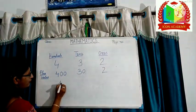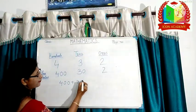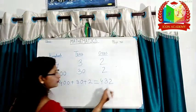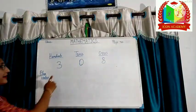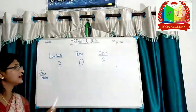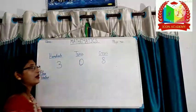So, four hundred plus thirty plus two equal to four hundred thirty-two. Here, the number is three hundred eight. Three is on hundreds place. Zero is on tens place. And eight is on ones place.